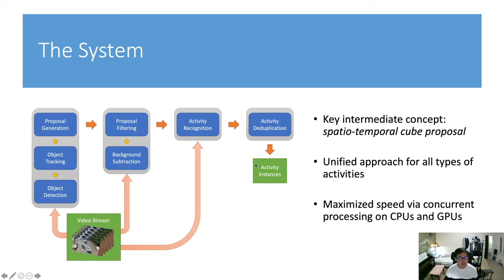What makes this system so successful? Here is an overview. We do object detection and tracking to generate proposals. Then with background subtraction, we filter the proposals. With an activity recognition module, we classify those proposals into activity instances and deduplicate them to get the final output. Here we introduce a key intermediate concept of spatial temporal cube proposals, and it's worth noting that this system is a unified approach for all types of activities.